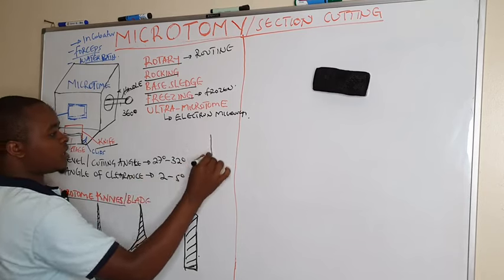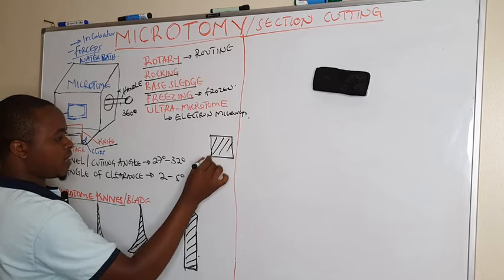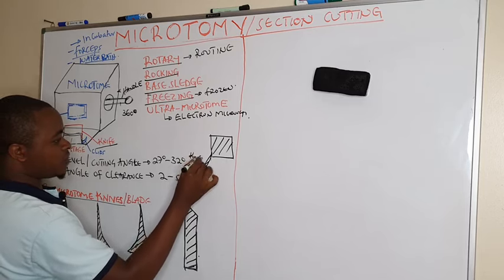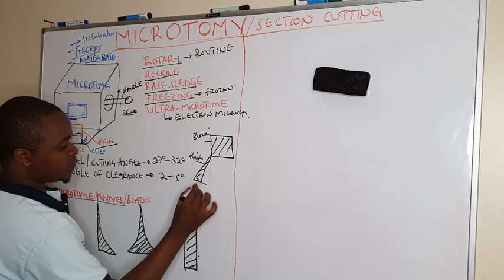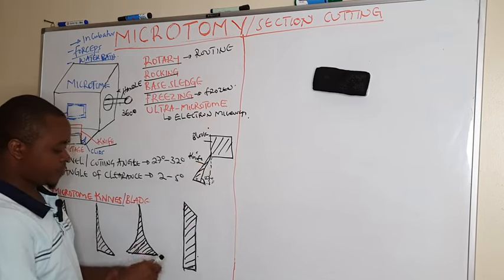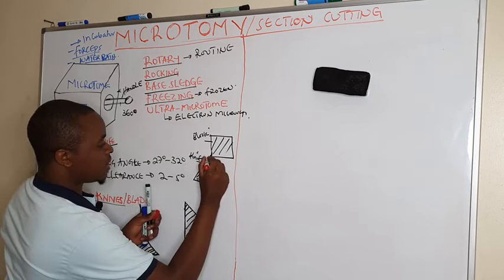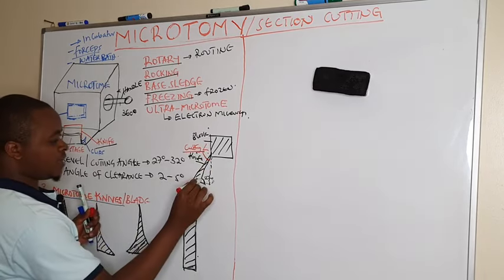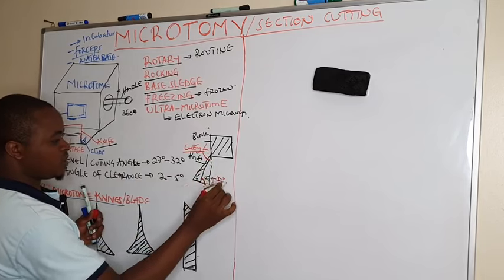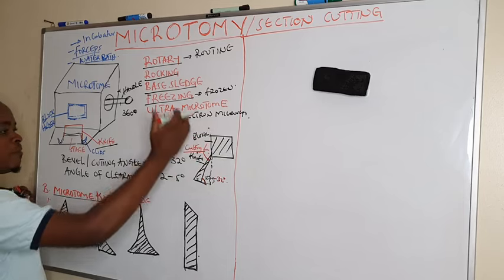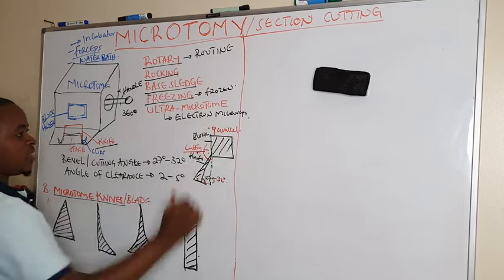To illustrate: if this is the block on the block holder and this is the knife, the angle of clearance is formed by extrapolating a line from the block — it should be between 27 degrees. The cutting angle, also called the bevel angle, is a separate angle. When fitting the knife on the stage, we have to ensure these angles are achieved, and the block should be parallel to the knife.